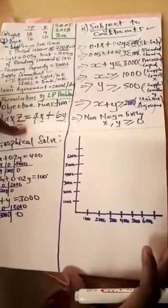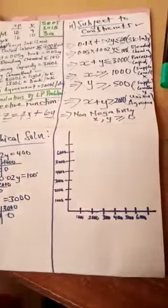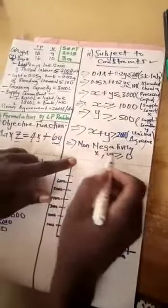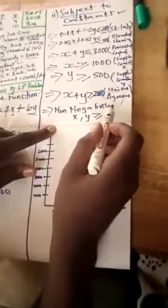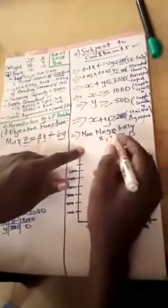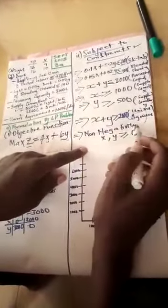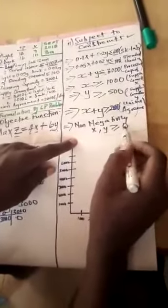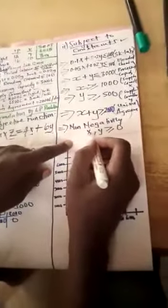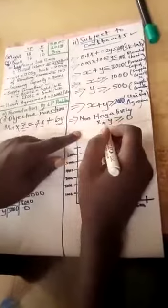Welcome to the third and final part of this problem. Part B wants a graphical solution. Remember we have the objective function and the constraints. I forgot to mention the last constraint — the non-negativity constraint. This will not always be stated but it is an assumption that must always be met. Anytime you are setting the constraints, always remember to put the non-negativity constraint. Non-negativity is set so that we do not have negative answers.